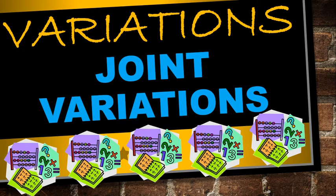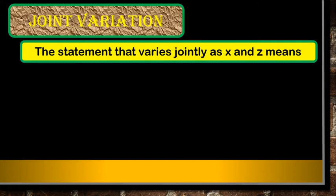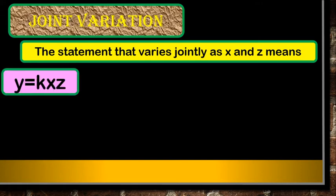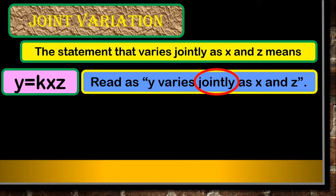Another kind of variation we're going to discuss is joint variation. The aim of this lesson is to illustrate situations that involve joint variation. Joint variation states that y varies jointly as x and z means y equals k times x times z. Joint variation includes two or more variables multiplied into the constant of variation. The clue word 'jointly' means you are going to join two or more variables by multiplying them.